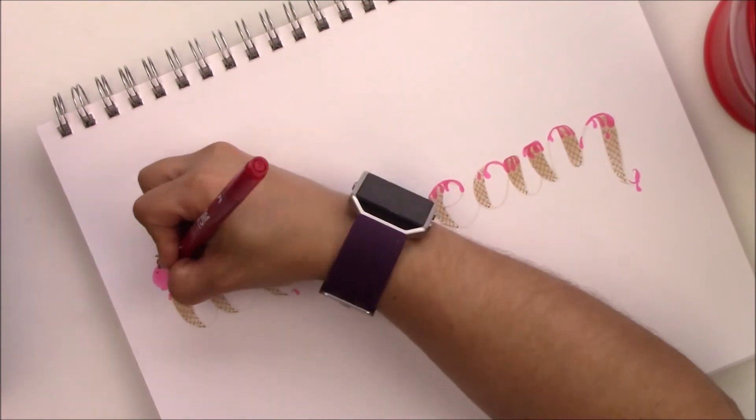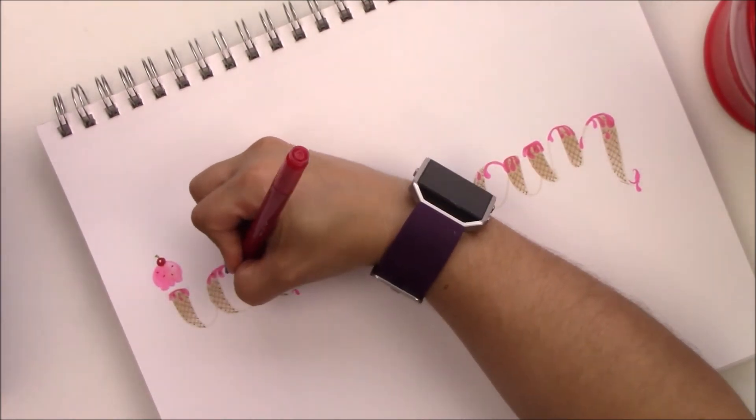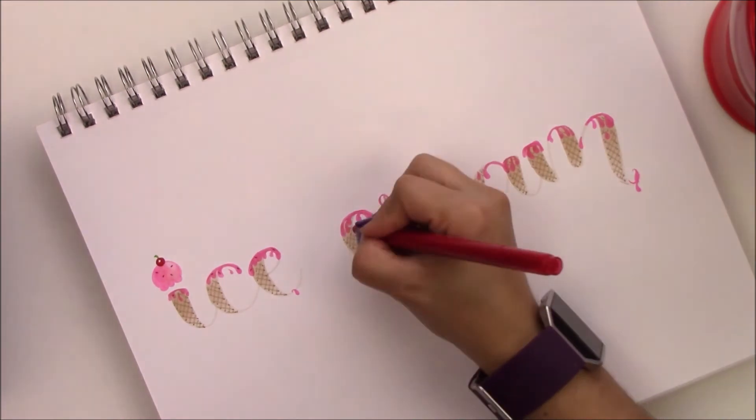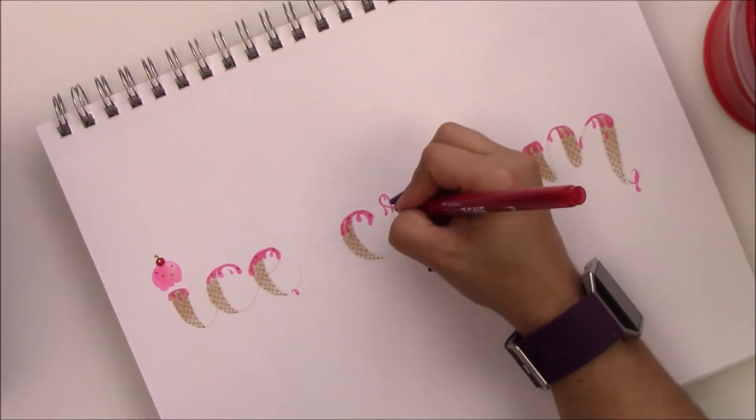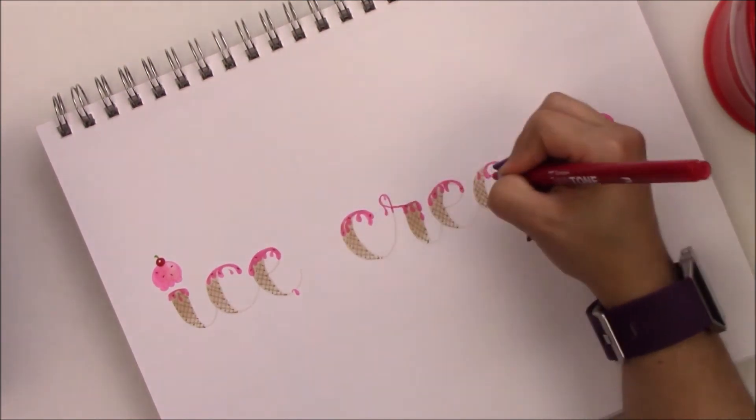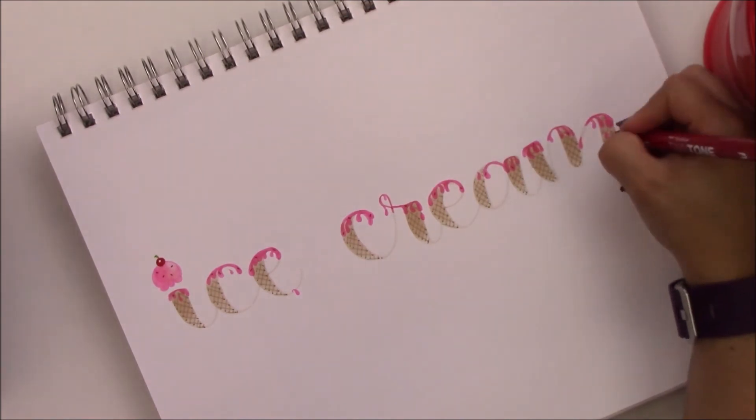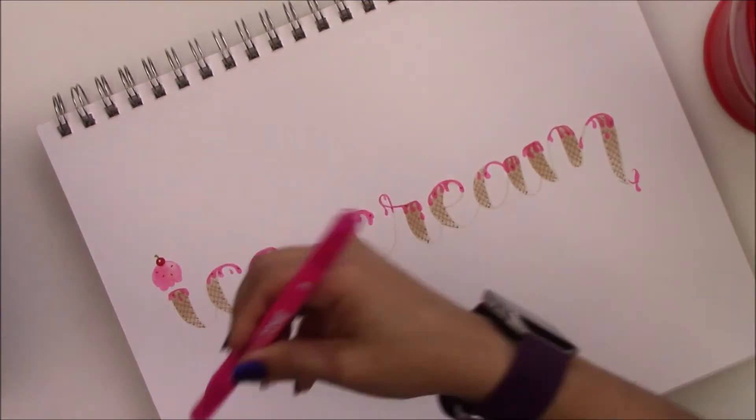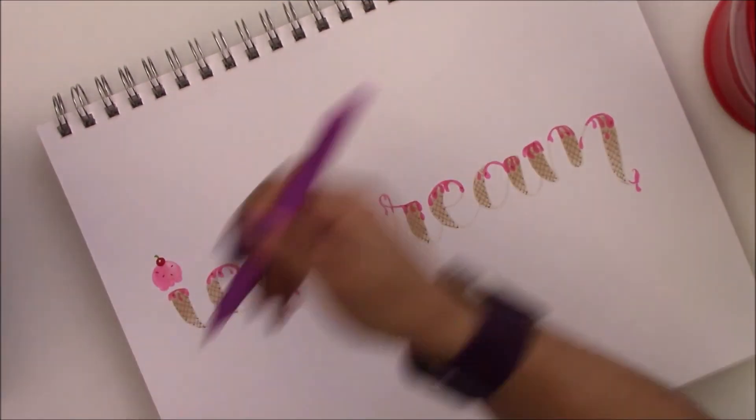Now with the fine tip I'm going to spread the sprinkles all over the word and I'm going to be using different colors. I'm going to use red, purple, orange, and blue.